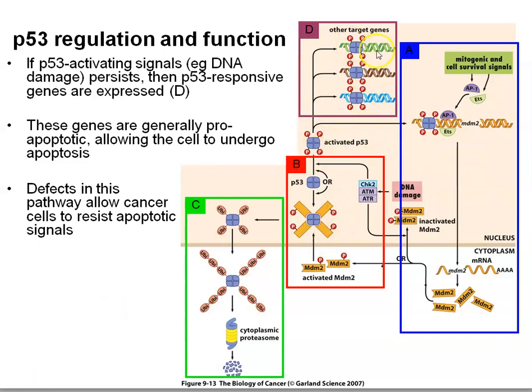The net effect of repairing DNA damage is that eventually p53 levels return to normal. Therefore p21 levels return to normal, Bax levels start to decrease and the cell won't undergo apoptosis, and the DNA repair enzymes and proteins are no longer overexpressed.